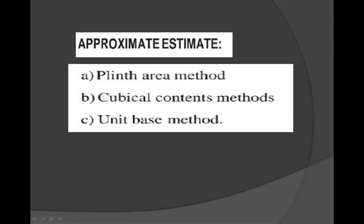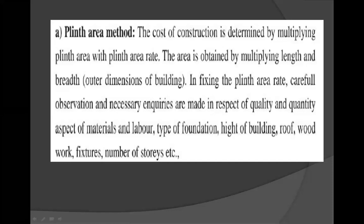Approximate Estimation has three stages. The first one is the Plinth Area Method, the second is the Cubical Content Method, and the third is the Unit-Based Method. The cost of construction is determined by multiplying the plinth area with the plinth area rate. The area is obtained by multiplying length and breadth — it is the outer side dimensions. In fixing the plinth area rate, careful observations and necessary enquiries are made regarding quality and quantity aspects of materials and labor, the type of foundation, height of building, roofs, woodworks, finishes, and number of storeys.